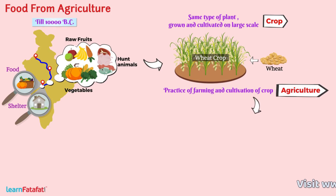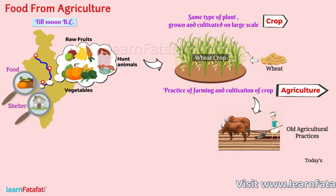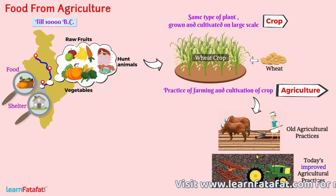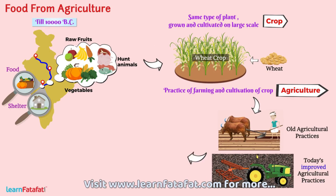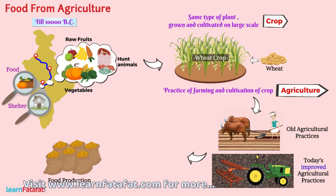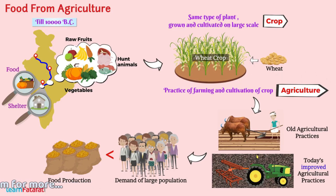The practice of farming and cultivation of crops is called agriculture. As compared to age-old practices, today agricultural practices are much more improved. But still, food production is insufficient to meet the demand of the large population, and so there is still a need for improvements.